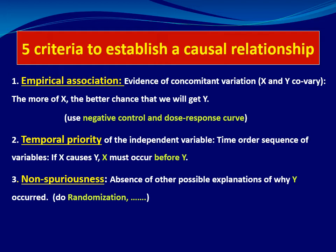Number three is non-spuriousness, which means the absence of any other explanation for why Y occurred or changed. That's why randomization is very important — to ensure that any animal has an equal chance to be distributed to any group, with no bias.